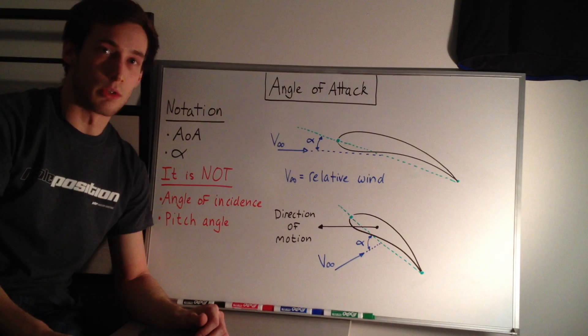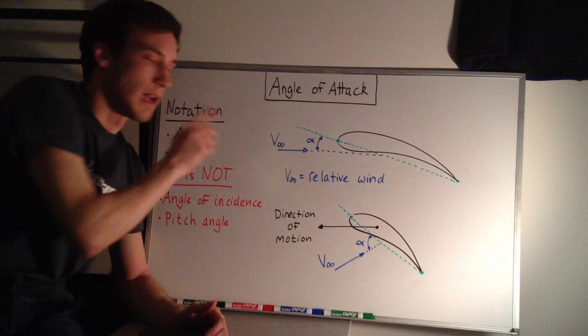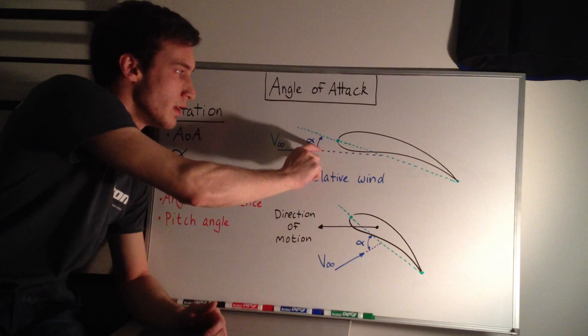So in this case, you can see the cord of the wing is kind of angled up, and I'm saying that the relative wind in this case is horizontal, so the angle of attack is the angle between the relative wind and the cord line.